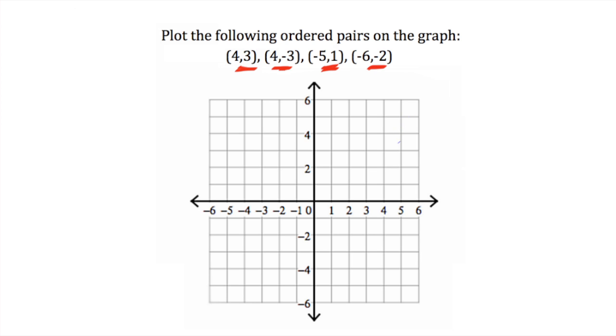Let's plot the first pair. We would begin by going over 4 on the x-axis. Again, remember this is the x-axis. We would go over 4, up 3, and put our point right there. The second ordered pair is (4, -3). We would go over again 4 on the x-axis,